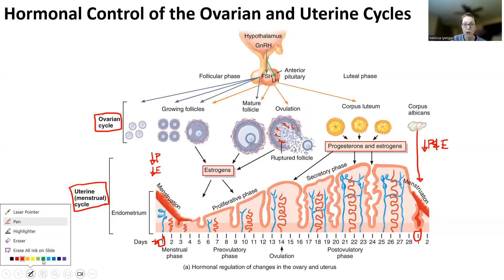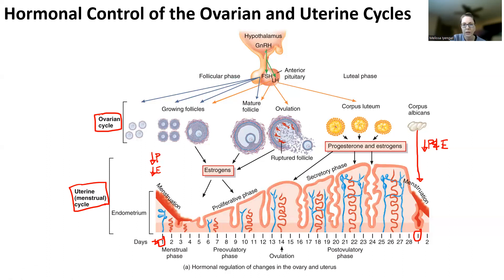At day one, we see a drop in progesterone and a drop in estrogen. Because progesterone and estrogen drop, that results in the hypothalamus secreting GnRH — gonadotropin-releasing hormone. GnRH targets the anterior pituitary gland to release gonadotropins. There are two of them: FSH, or follicle-stimulating hormone, and LH, or luteinizing hormone. So you have to follow these two hormones separately.